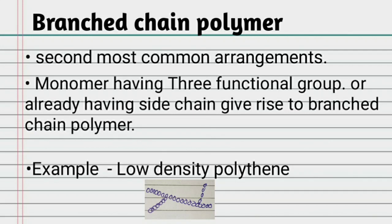High density polyethylene has a linear arrangement with compact packing, giving it higher density. In contrast, low density polyethylene has a branched arrangement resulting in loose packing, which gives it lower density.